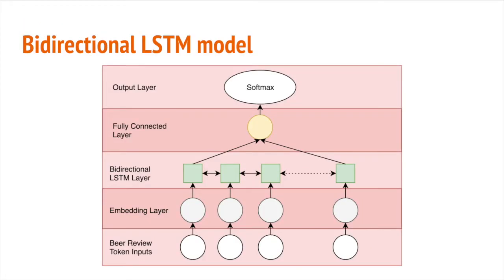To give a bit of an overview of the bidirectional LSTM model we used, we limited the input for the reviews to 400 words after determining that this would take into account the entirety of almost all the reviews while not taking too long to train. We then used our pre-trained Word2Vec vectors to take embeddings of each of these words, which we fed into our bidirectional LSTM layer. The output of this was then fed into a fully connected layer, which then went through a softmax function and delivered our prediction.